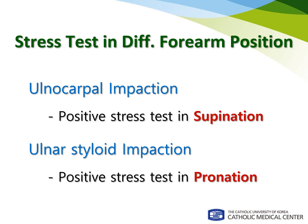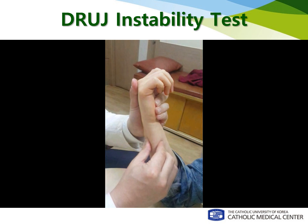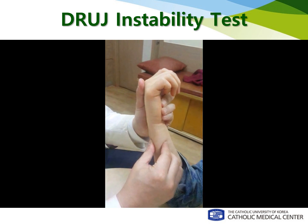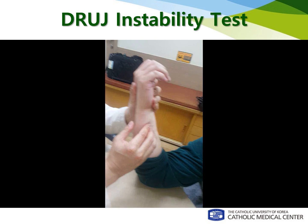In my experience, ulnocarpal impaction patients usually have a positive stress test in the supinated position, and ulnar styloid impaction patients usually have a positive stress test in the pronated position. Diagnosis of TFCC foveal tear also relies on physical examination. The patient usually has tenderness around the foveal area, which is very sensitive, and we can do provocative measures such as the DRUJ stress test. We need to do the DRUJ stress test in both supinated and pronated positions to find which part of the TFCC was torn.